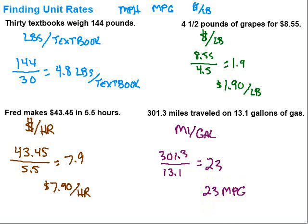So, finding unit rates — the key is remembering that it's going to be the amount per one of something, and how we set it up will determine what that label is. Pick what you want the label to be — do you want miles per gallon or gallons per mile? Figure out what that is, that tells you how to set it up. Do the division, throw your label on there, and you've got it. Hope that was helpful. Keep working hard on your math — you can do it.